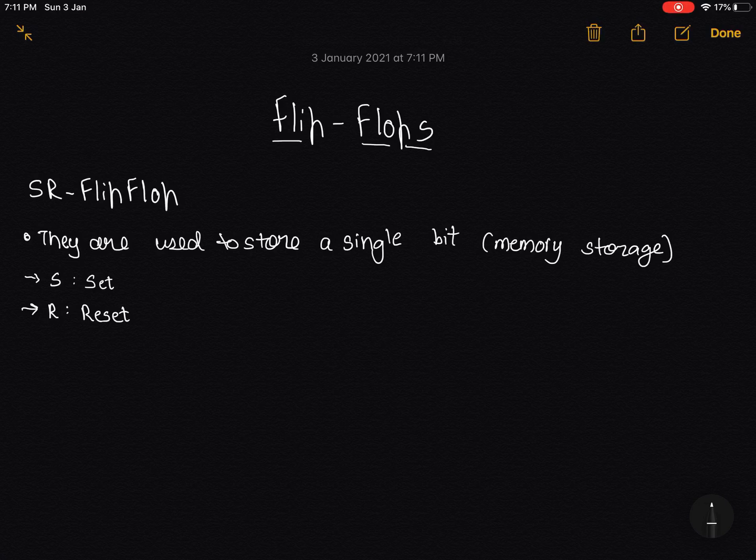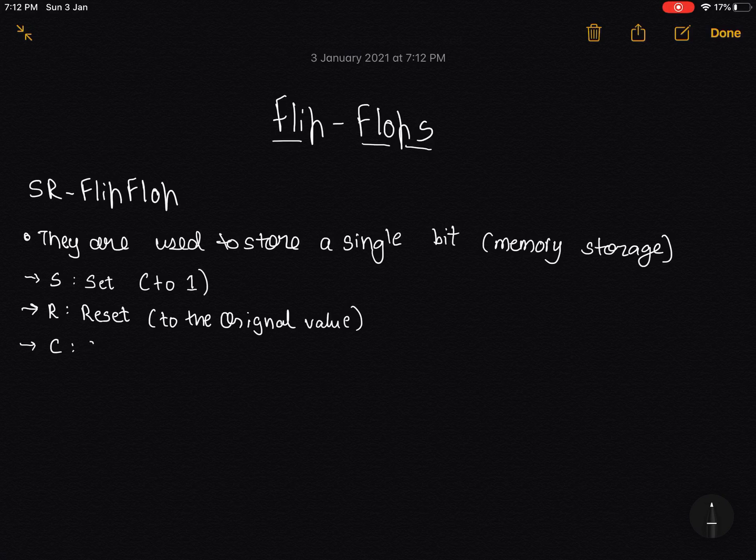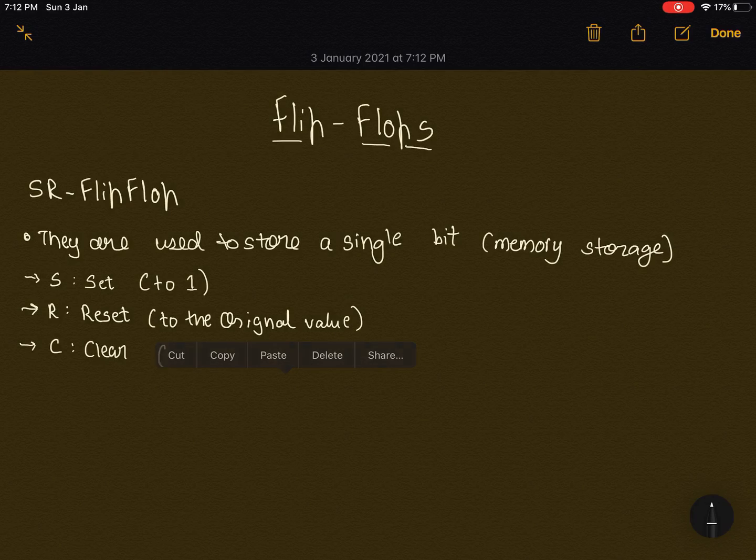which is binary, either 1 or 0. In S and R, the S stands for Set. The R stands for Reset. Back to the original value. This is to 1. Set to 1. And this is to the original value. C is clear, which is back to 0.